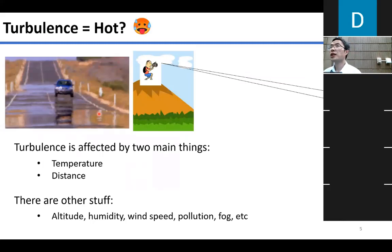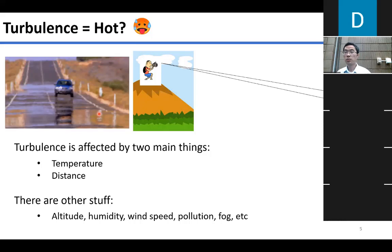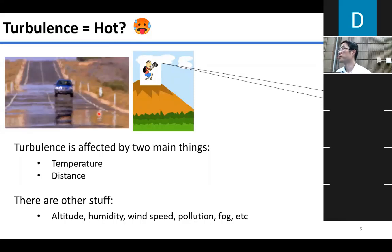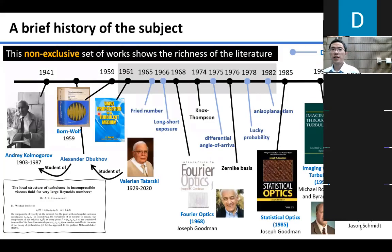Is turbulence just a consequence of heat? Of course not — it's a consequence of both heat and distance. Other factors include altitude (where you place the camera), humidity (New Orleans today is much more humid than a desert environment), wind speed which changes the temporal variation of turbulence, and additional factors like pollution and fog.